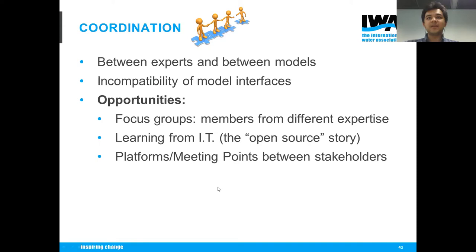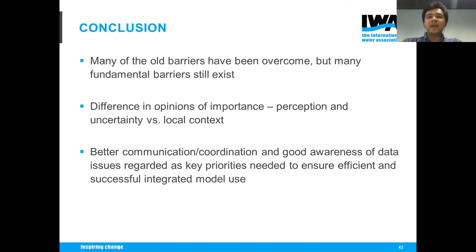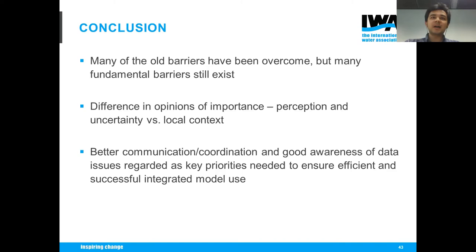To summarize: we have many of the old barriers that we've overcome, but there are still some fundamental ones that exist — policy and regulation to a lesser degree, and administrative fragmentation. There is a difference in the perception of what really is a barrier, and there's uncertainty around what the barrier means to integrated modeling. Many people thought based on the local context, so it's very hard to define a universal set of challenges. But many do agree that with better communication, coordination, and good awareness of data issues, we can ensure better and efficient adoption of integrated models in practice.